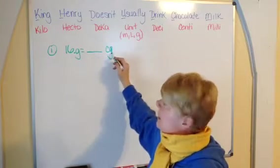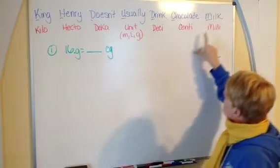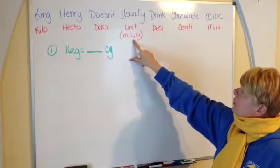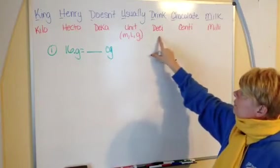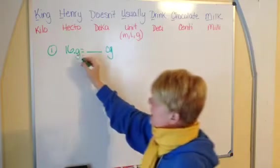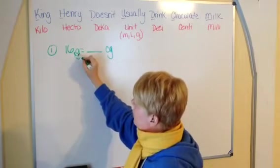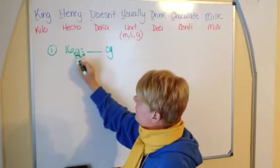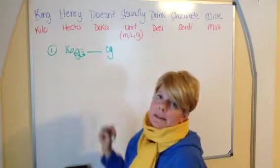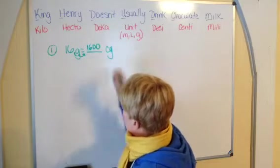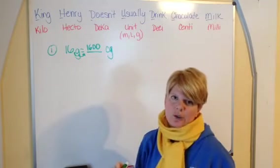So we're over here at our basic unit, which is grams. You're going to centigrams, which is one, two steps to the right. So you're going to take that decimal point and move it one, two places to the right. Those two empty places stand for your zeros. So your answer is 1,600 centigrams.